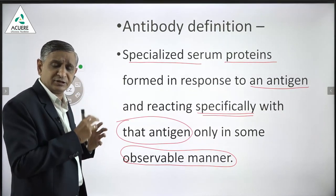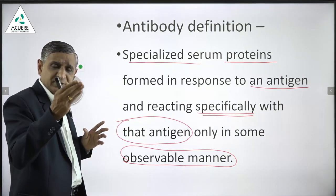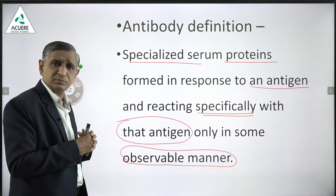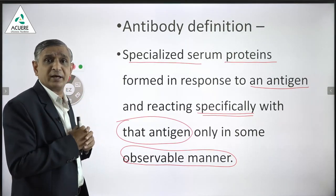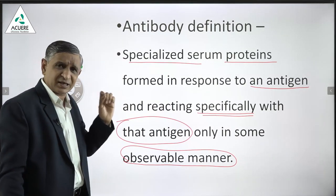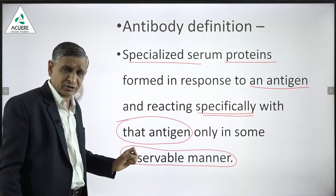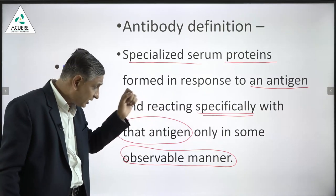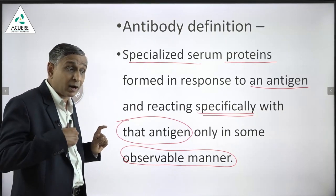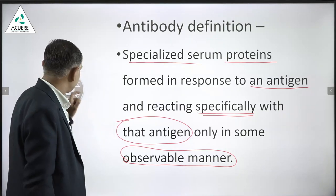Agglutination reaction is also a reaction of an antibody with its antigen — for example, in the determination of blood groups. In simple language, an antibody is a specialized serum protein produced in response to an antigen, it reacts specifically with that antigen, and it reacts in an observable manner.